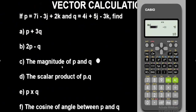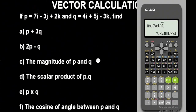Now to solve the magnitude of vector P and Q — very, very easy. The notation for magnitude in mathematics is absolute value. On this calculator, to find the magnitude of vector P, look at the Shift button — you will see 'Abs' on top of it, which stands for absolute value. Press Shift then that button, then input vector P which is vector A on the calculator: press Shift 5, option 3, and close the bracket. Press equals, and this gives you the magnitude of vector P.